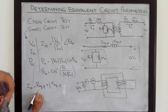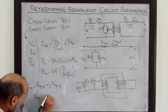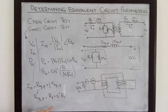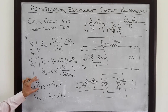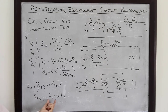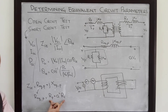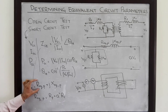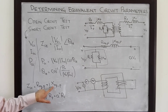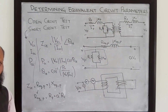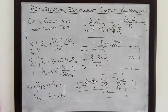We know that R_eq_primary equals Rp plus a²·Rs, and X_eq_primary equals Xp plus a²·Xs. Although we have determined R_eq_primary, we have no information about Rp and Rs separately, and there is no way to calculate them separately. Likewise, we cannot determine Xp and Xs separately. You will also perform a lab experiment on a transformer to determine all these circuit parameters.